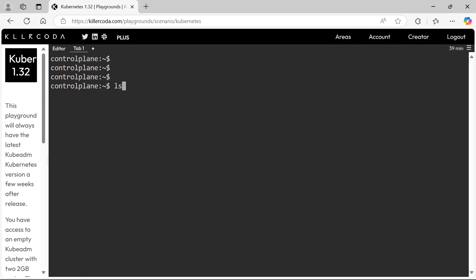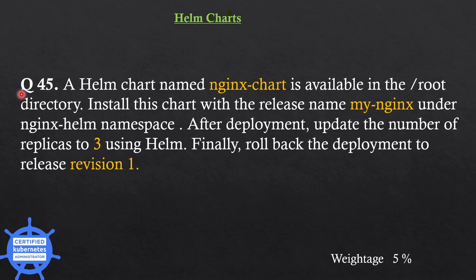Let's go to the next question. A Helm chart named nginx-chart is available under the /root directory. Install this chart with the release name myNginx under the nginx-helm namespace. After deployment, update the number of replicas to 3 using Helm. Finally, roll back the deployment to release revision 1.